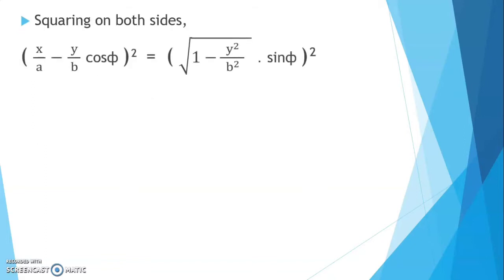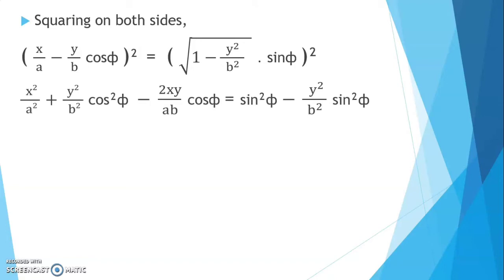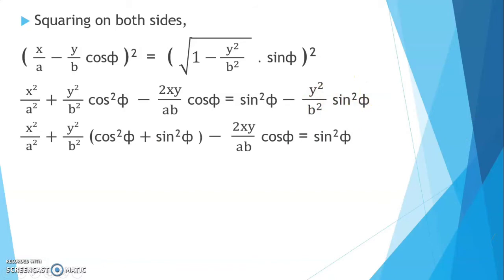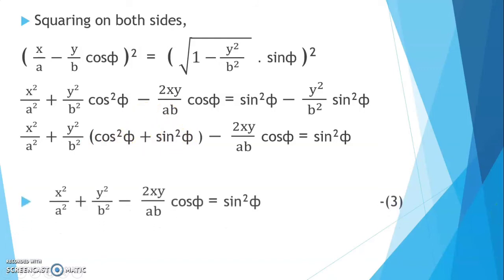Squaring both sides, we get x²/A² + (y²/B²)·cos²(φ) − 2xy/(AB)·cos(φ) equals to sin²(φ) − (y²/B²)·sin²(φ). Taking the y²/B²·sin²(φ) term to the left-hand side, we get x²/A² + (y²/B²)·(cos²(φ) + sin²(φ)) − 2xy/(AB)·cos(φ) equals to sin²(φ). Since cos²(φ) + sin²(φ) = 1, this simplifies to x²/A² + y²/B² − 2xy/(AB)·cos(φ) = sin²(φ). This is our third equation.